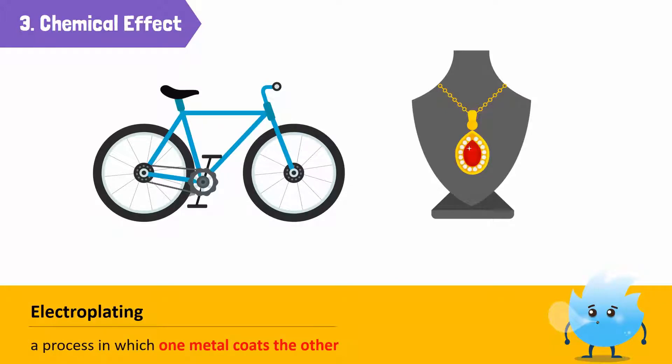This chemical effect is used for electroplating, a process in which one metal coats the other. For example, the rims of a bicycle are coated with nickel. Sometimes, even jewellery is coated with gold to enhance its beauty.